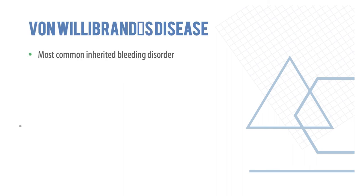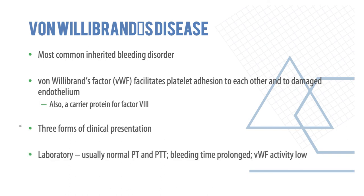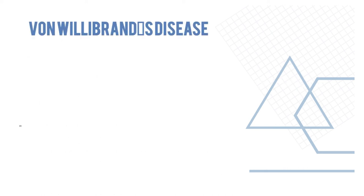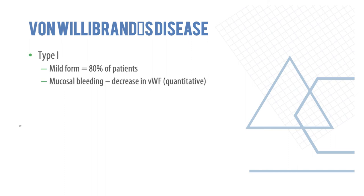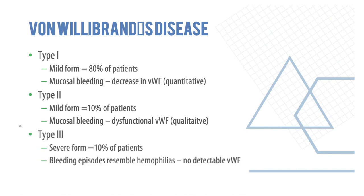Von Willebrand's disease is the most common inherited bleeding disorder. Von Willebrand's factor facilitates platelet adhesion to each other and to damaged endothelium, and also acts as a carrier protein for factor 8. Lab shows normal PT and aPTT, prolonged bleeding time, and low von Willebrand's factor activity. Type 1 is the mild form in 80% of patients with mucosal bleeding due to decreased VWF. Type 2 is mild, seen in 10%, with dysfunctional VWF. Type 3 is severe in the remaining 10%, with bleeding resembling hemophilia and no detectable VWF.